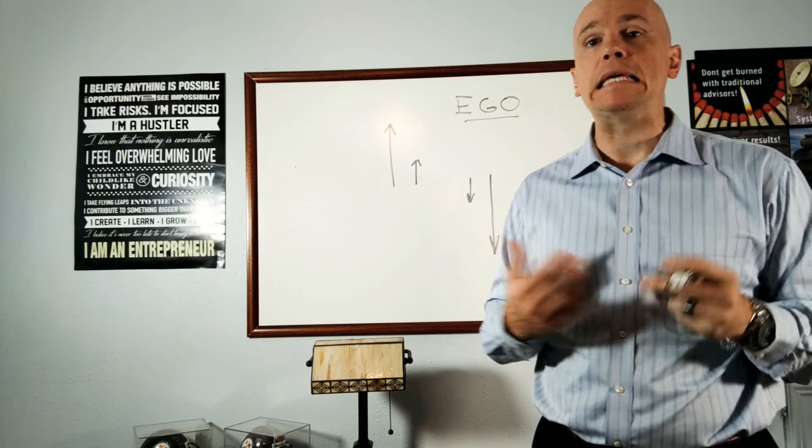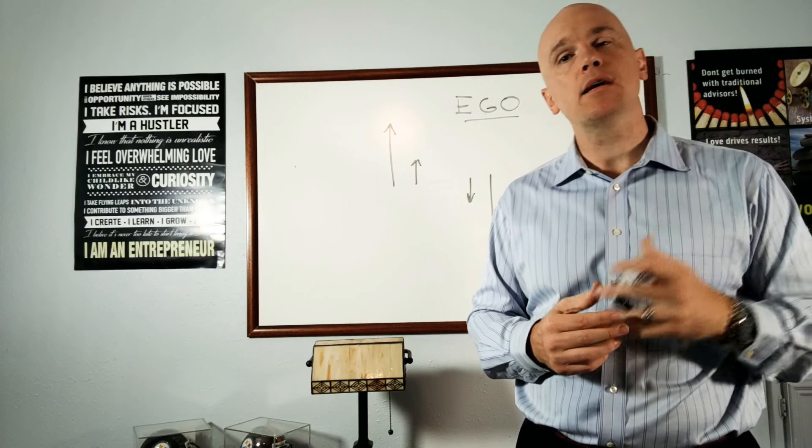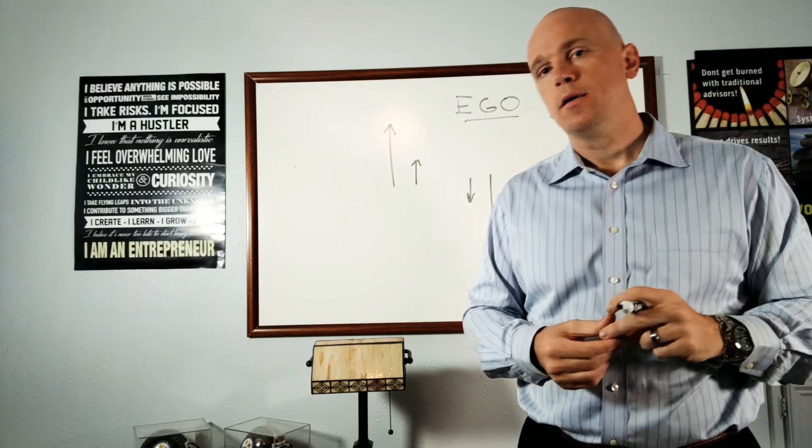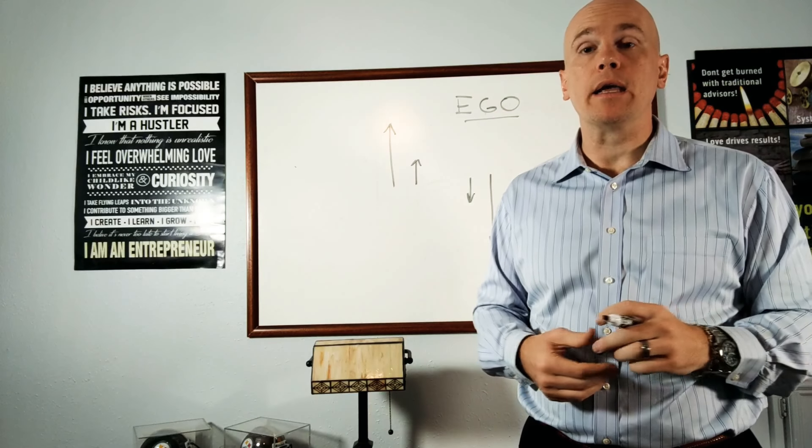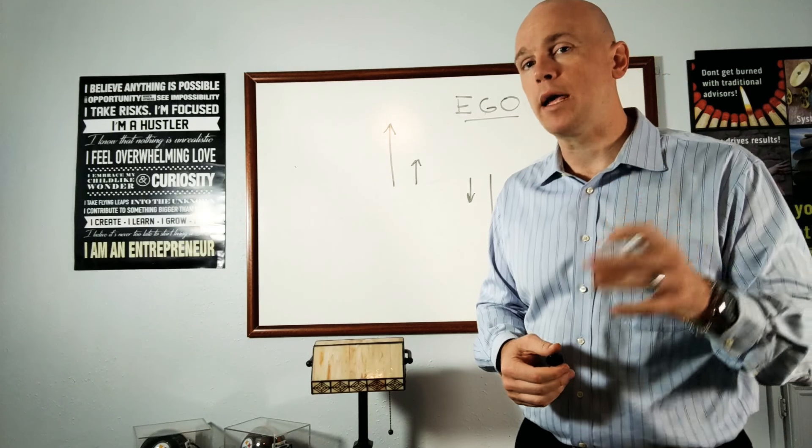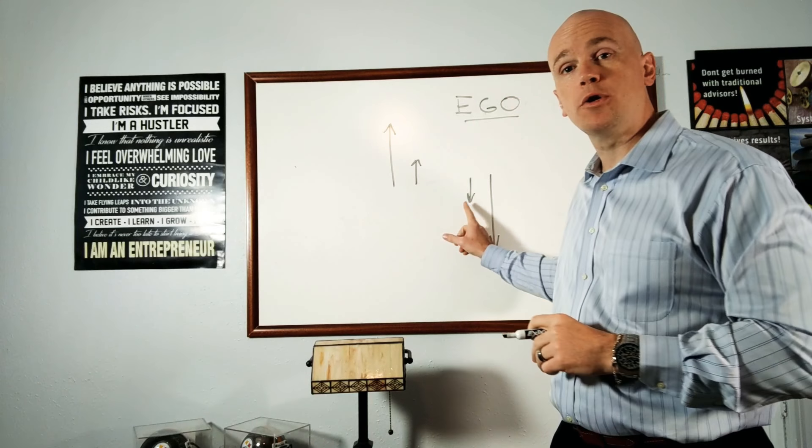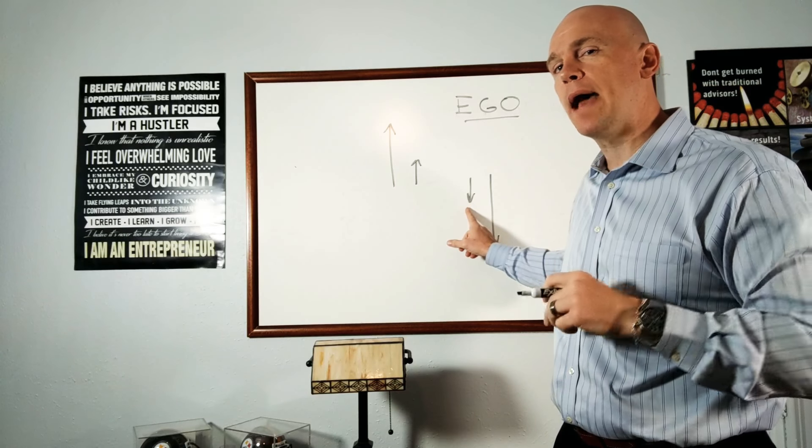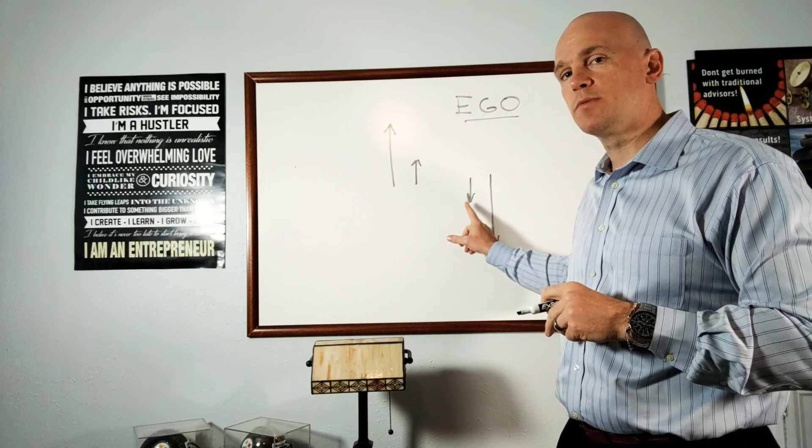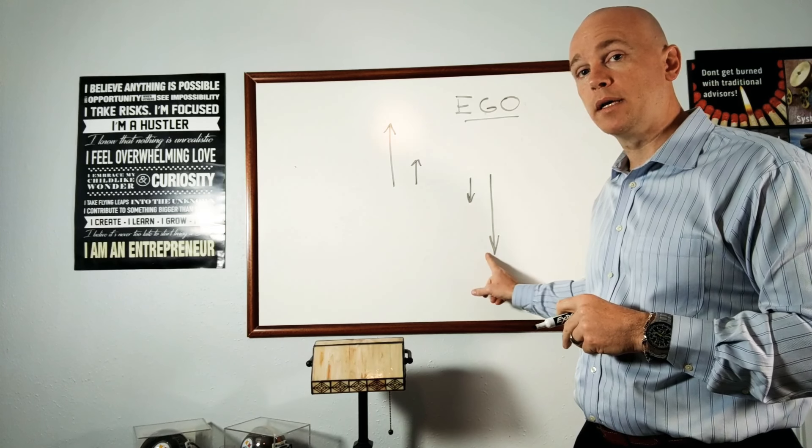Ego. We need to remove the ego that we have in our trades because the ego says, I want to be right. Well, I'd rather make money than be right. And when you say I want to be right, what that means is that you take a small loser and you hold on to it because you think it'll be back instead of following the rules. And so a small loser then becomes a big loser.